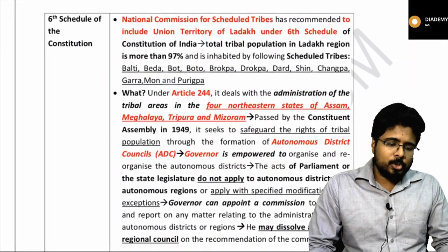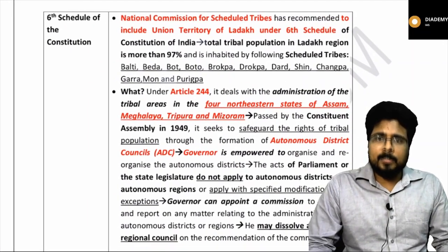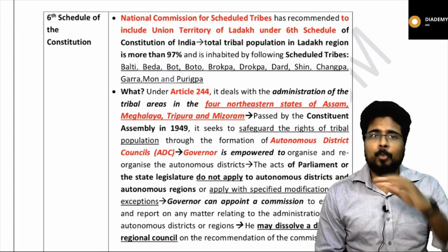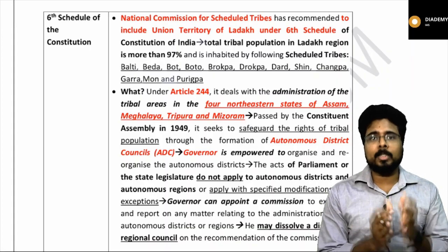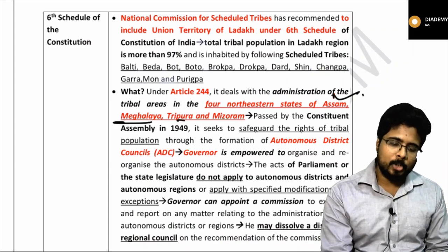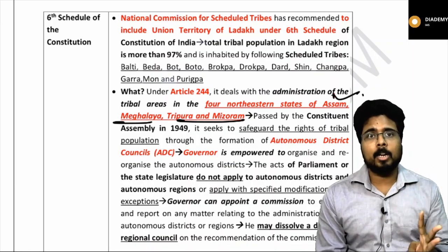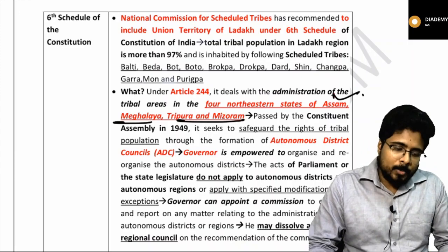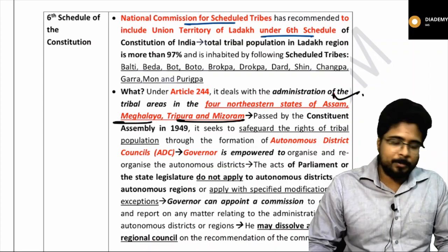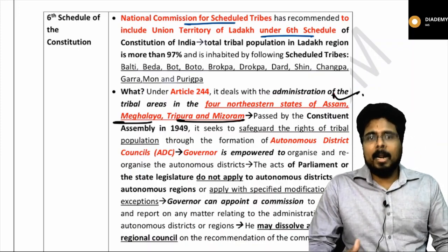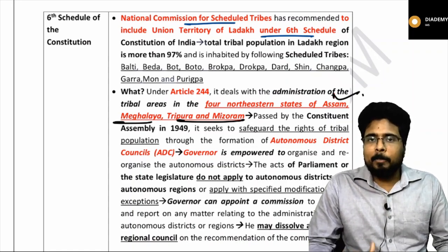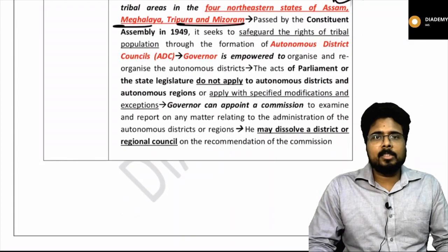The Sixth Schedule of the Indian Constitution was in news. We have the Fifth Schedule and the Sixth Schedule, which provide special provisions to tribal areas. The Fifth Schedule talks about tribal areas of the whole of India, but the Sixth Schedule specifically talks about tribal areas in states like Assam, Meghalaya, Tripura and Mizoram. Recently, the National Commission for Scheduled Tribes recommended including the Union Territory of Ladakh under the Sixth Schedule. The district councils and regional councils are there in the Sixth Schedule, and a governor of that state can declare that an act of parliament is not applicable to that state.